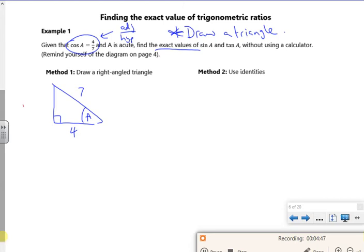So 49 minus 16, it's 33. So square rooted, so I've got root 33, that doesn't turn it down. So exact values of sin, so sine A is the opposite which is root 33 over the hypotenuse which is 7.